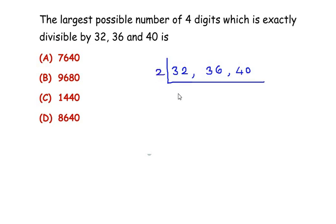So 2 times 16 is 32, 2 times 18 is 36, 2 times 20 is 40. Then these three again go in the table of 2: 2 times 8 is 16, 2 times 9 is 18, and 2 times 10 is 20.